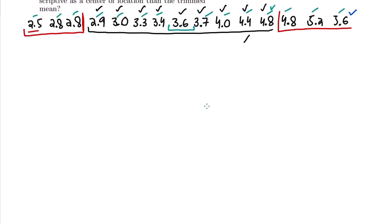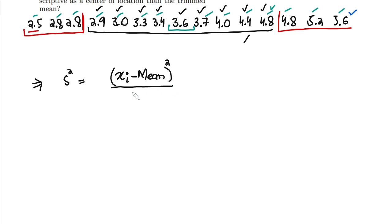This is the data set we have, and in order to find out the variance, variance is usually represented by s-squared. To find it, we take each data point, subtract the mean from it, take its square, and divide by the number of points minus one. So I have to subtract the mean from each of these points xi, where i starts from the first data point and goes up to n.